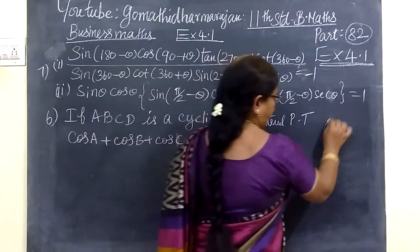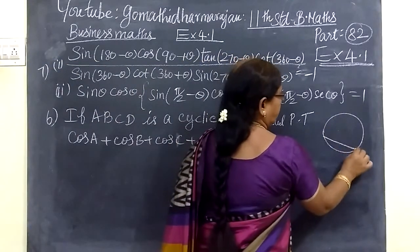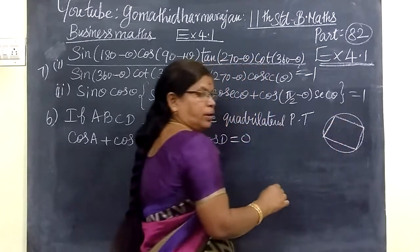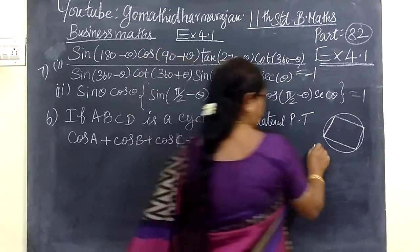We know in a cyclic quadrilateral, the four vertices lie on the circle.